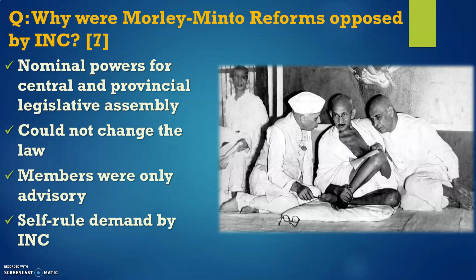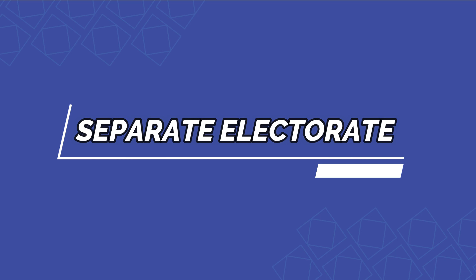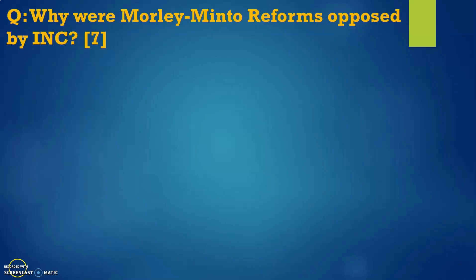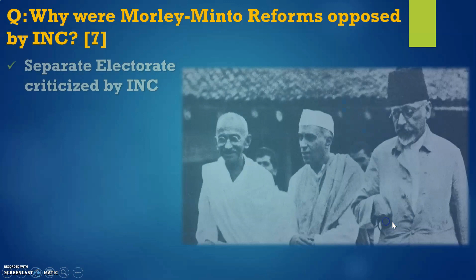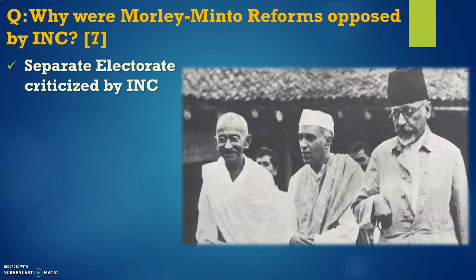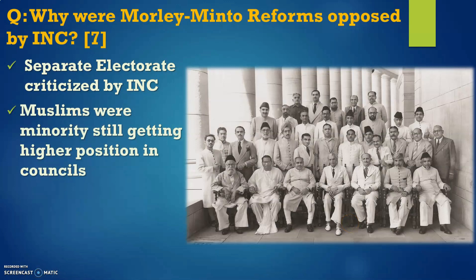Moving to the second paragraph — the major heading is the separate electorate. This became another reason for the INC's rejection of the reforms. It was criticized by the INC because they never wanted Muslims, being a minority, to be given a separate electorate. The separate electorate point from the Shimla Deputation was added and maintained in the Morley-Minto Reforms, which is why the INC criticized these reforms.